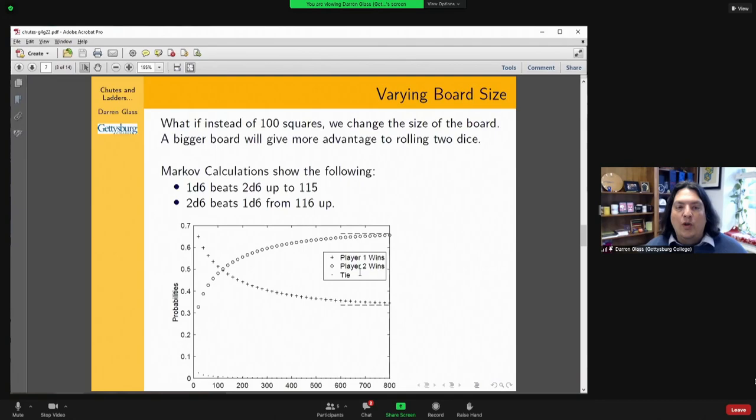In fact, here are actual Markov calculations that show that you want to choose two dice if the board has 116 or more squares, and one die if it has up to 115 squares. So that was interesting and fun.